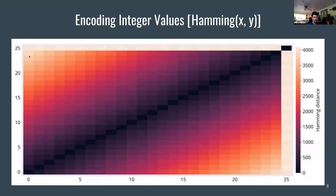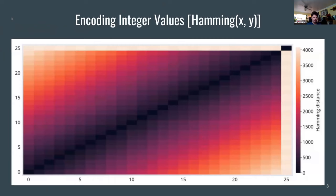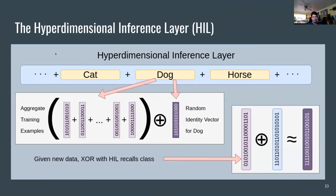To encode an image as a hypervector, you choose two permutation patterns — one for the row and one for the column — then represent your pixel data as the intensity value, permute it, and XOR everything together for every pixel to get the image hypervector. For inference, with classes like cat, dog, and horse, you aggregate for each class the images you have seen and XOR with a random vector representing that class. When presenting a new piece of information, you XOR it with this superposition of classes.